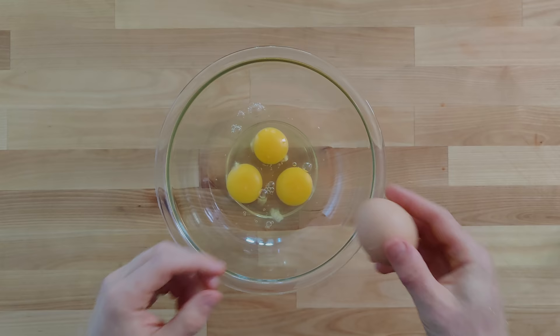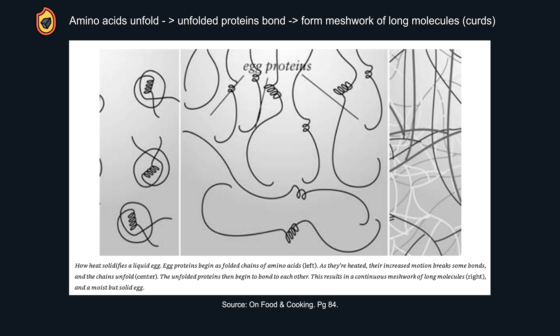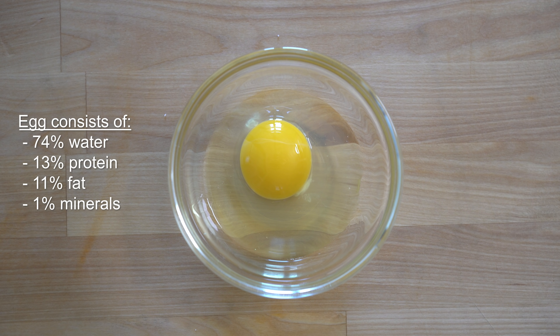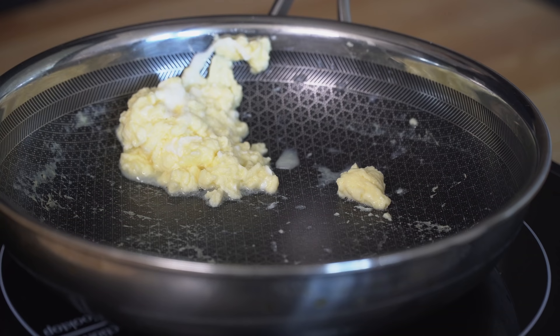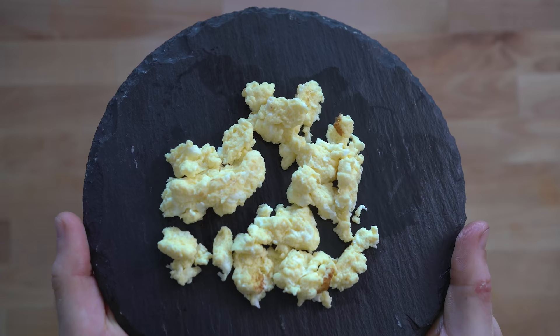How exactly does heat solidify a liquid egg? As mentioned in On Food and Cooking, egg proteins start as folded chains of amino acids. When heat is applied, those chains unfold first and then begin to bond to each other, resulting in a continuous network of long molecules — which is our egg curd. A whole egg is typically made up of around 74% water, 13% protein, 11% fat, and 1% minerals. That water is the one we need to be wary of — if the eggs are overcooked, the proteins bond exclusively to each other and squeeze the water out of the protein network. This is what results in those weepy, watery eggs you get at most continental hotel breakfasts.